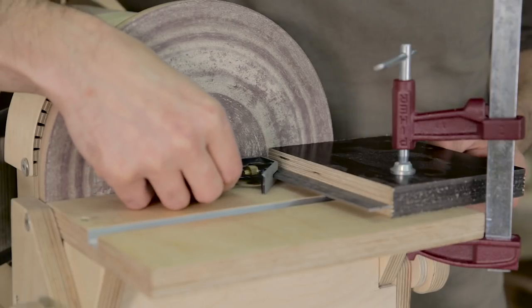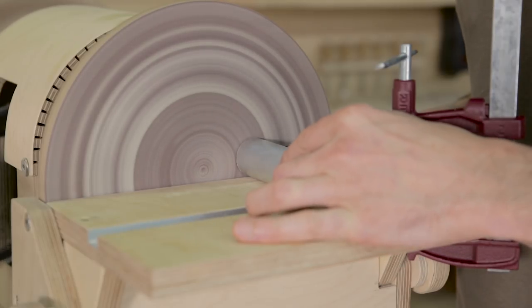Now I place a template on the sanding disc table that will allow me to cut the pieces to the exact length perfectly straight.